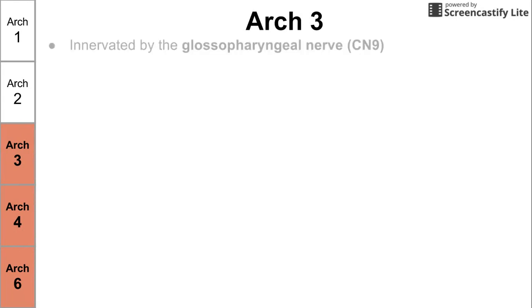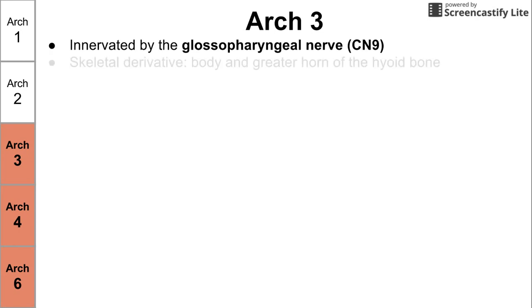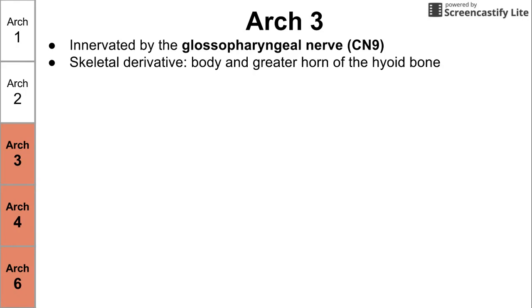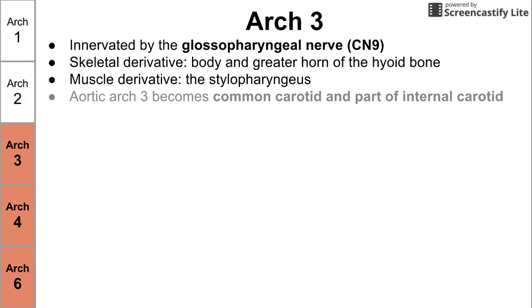The last three arches have less information — we can go through them quickly. Arch three is innervated by the glossopharyngeal nerve, cranial nerve nine. Skeletal derivatives include the body and the greater horn of the hyoid bone — so part of the hyoid comes from arch two, and the rest from arch three. The major muscle derivative of arch three is the stylopharyngeus, and the major artery from arch three becomes the common carotid and part of the internal carotid.